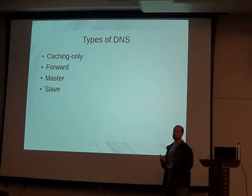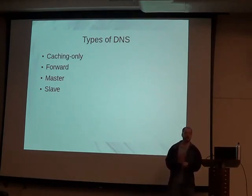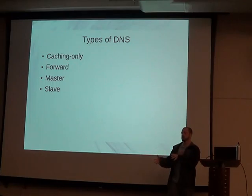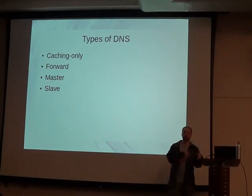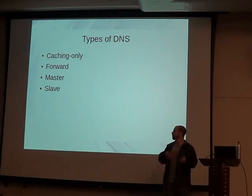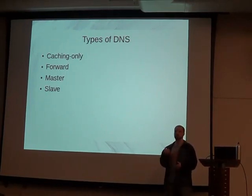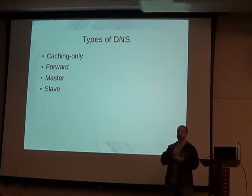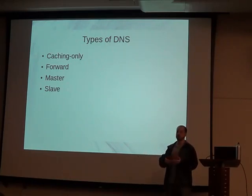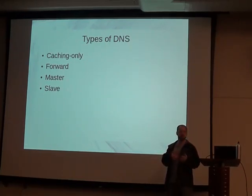Forwarding servers are useful when you have an enterprise where Windows is running their own DNS server and Unix/Linux is running their own. You can forward requests from your DNS server over to the Windows server, depending on which IP or domain they're looking up. Rather than keeping everything on your box, you can get it all forwarded to the correct place — and they can do the same back to the Unix/Linux DNS server.